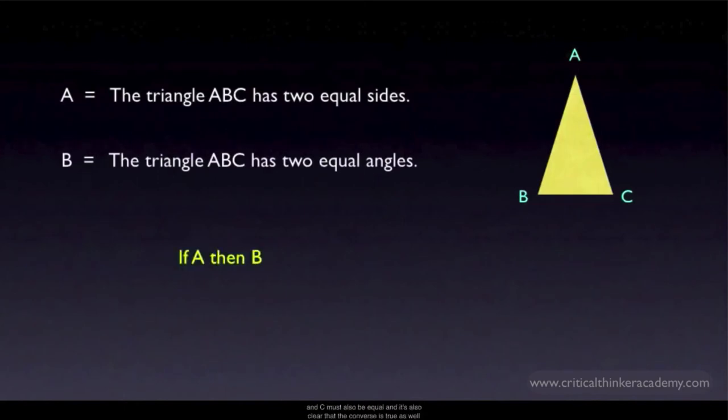And it's also clear that the converse is true as well. If a triangle has two equal angles, then it also has two equal sides. So if B then A is also true. But if both of these conditionals are true, then we can say that A is true if and only if B is true, and vice versa.